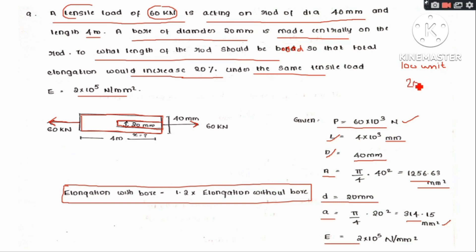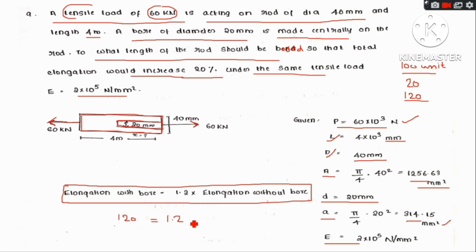So we set up the condition: elongation with bore equals 1.2 times elongation without bore. If without bore it is 100 units, with bore it becomes 120 units, representing a 20% increase under the same tensile load.